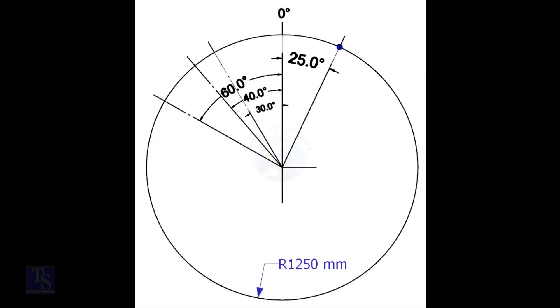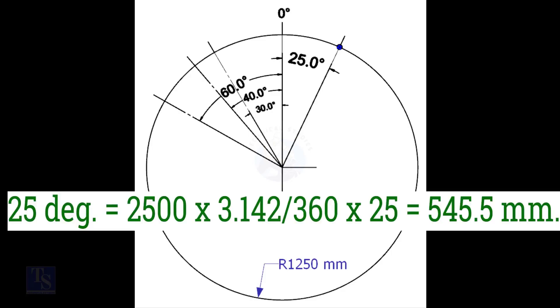We have the included degree and the diameter of the tank. Let us calculate the arc length. Arc length for 25 degree is equal to outer diameter into 3.142 divided by 360 into 25, is equal to 545.5 millimeters.